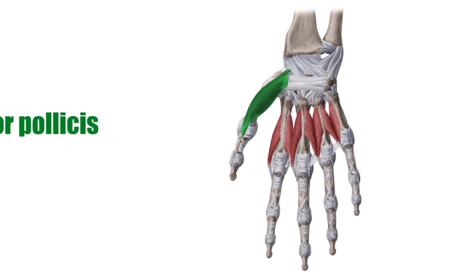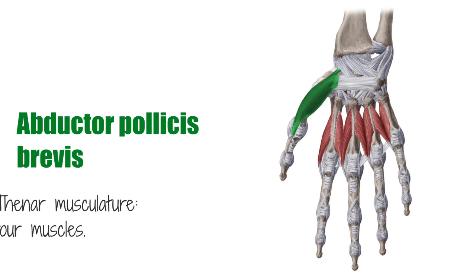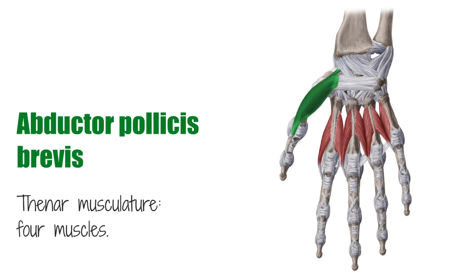Hey there, it's Matt from KenHub, and in this tutorial we will be discussing the abductor pollicis brevis muscle. The thenar musculature consists of four muscles located on the radial side of the palm. Together, they form the ball of the thumb known as the thenar eminence. They originate at different carpal bones and distally attach to the thumb. The focus of this tutorial will be the abductor pollicis brevis, which is one of the thenar muscles.